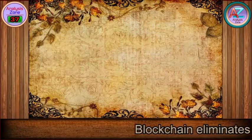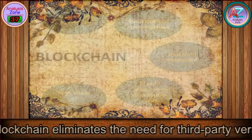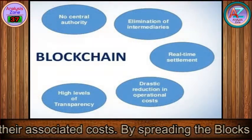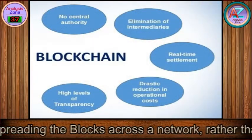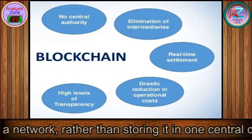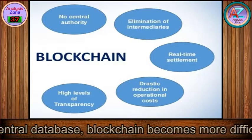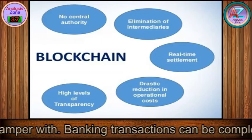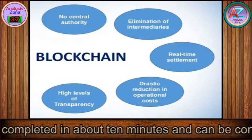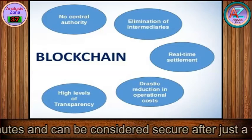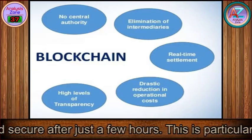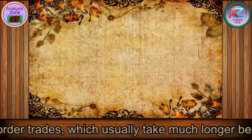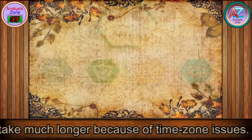Blockchain eliminates the need for third-party verification and, with it, their associated costs. By spreading the blocks across a network rather than storing them in one central database, blockchain becomes more difficult to tamper with. Banking transactions can be completed in about 10 minutes and can be considered secure after just a few hours, which is particularly useful for cross-border trades that usually take much longer because of time zone issues.